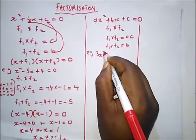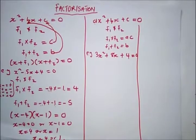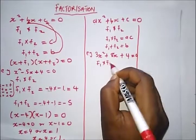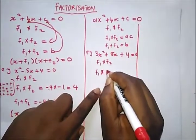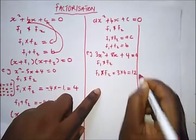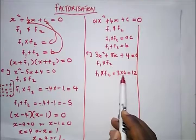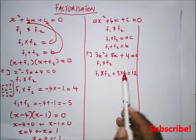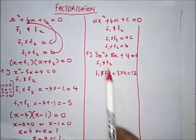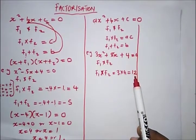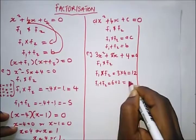For example, factorize 3x² + 8x + 4 = 0. We need two factors f1 and f2 where f1 × f2 = 3 × 4 = 12, and f1 + f2 = 8. We look for factors of 12 that add up to 8. The easiest pair that comes to mind is 6 and 2, because 6 × 2 = 12 and 6 + 2 = 8. So f1 = 6 and f2 = 2.